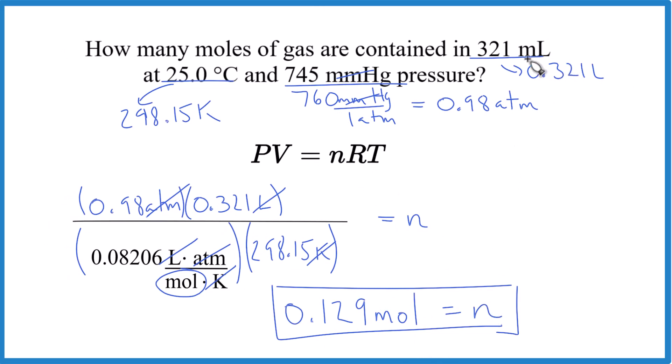So the key here, make sure all your units match up with your constant R. And then if you get something like millimeters mercury, if you can get that value for R, that's great. Otherwise, convert it to atmospheres. And you'll get the same answer either way. This is Dr. B. Thanks for watching.